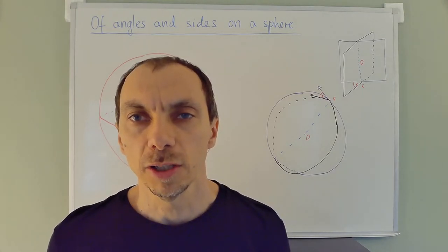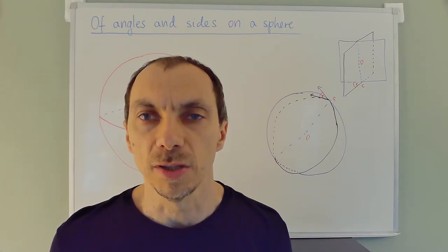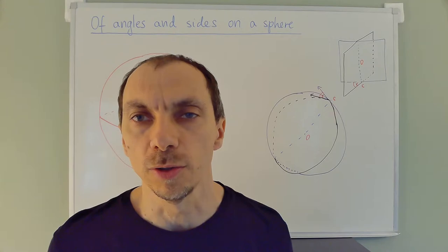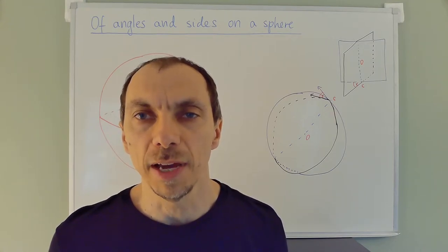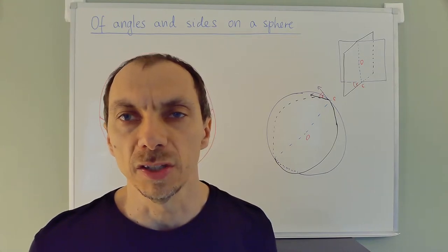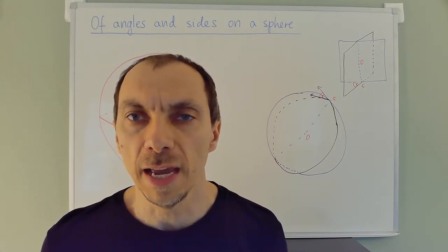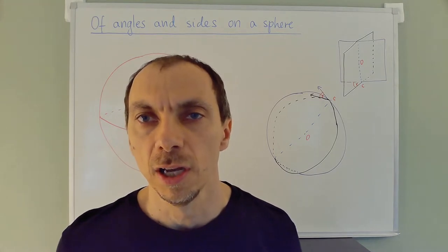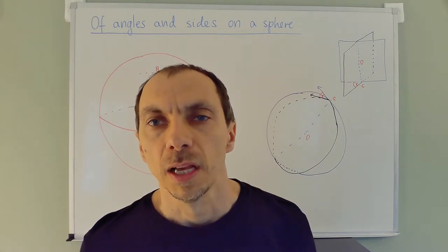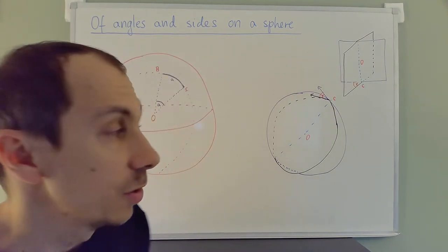What causes sometimes a little confusion is that the sides or line segments on the sphere can also be interpreted as certain angles. So we have two types of angles here: the ones that can be interpreted as sides, and those that are honest-to-goodness angles between sides on the sphere. So that we have clarity from this point on, let's look at what the distinction between them is.